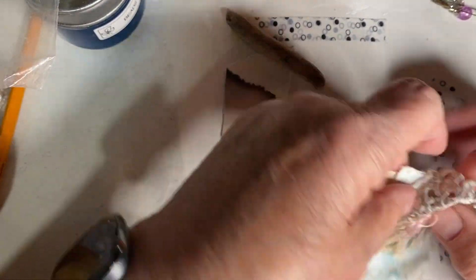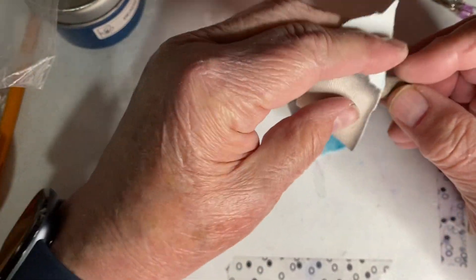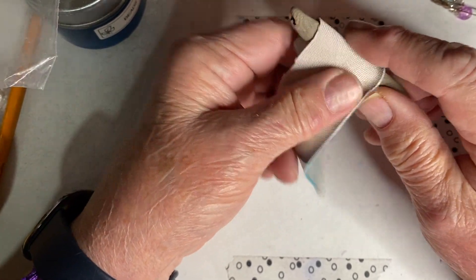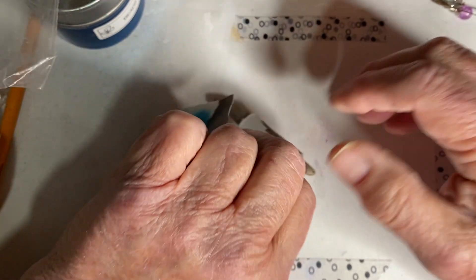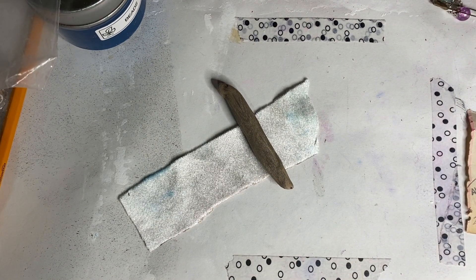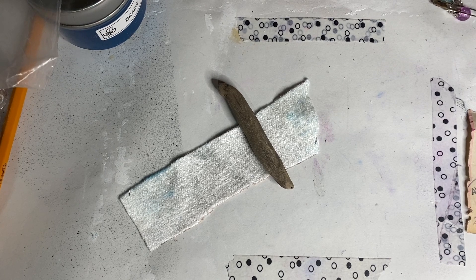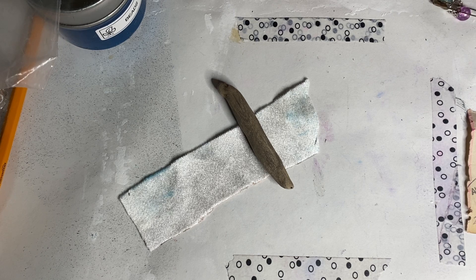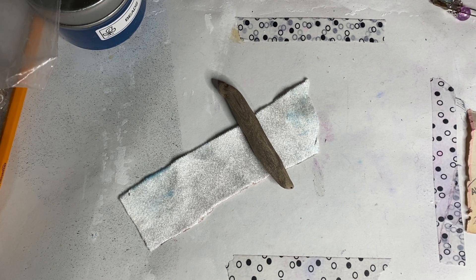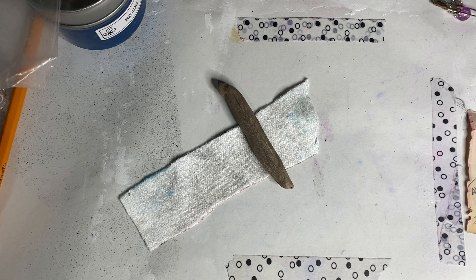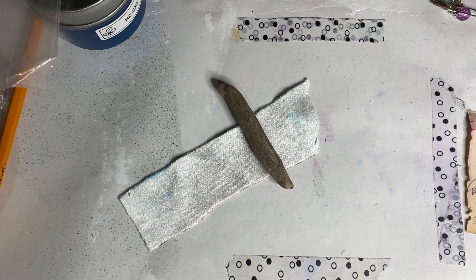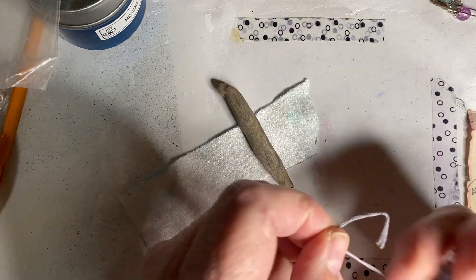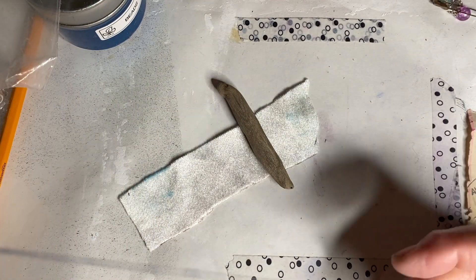So we are going to first put this, jump this on here and sew it. And I did not thread a needle. So I apologize for that. But I don't think I have some gray embroidery floss that I think will work for this.